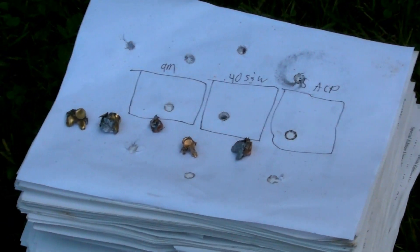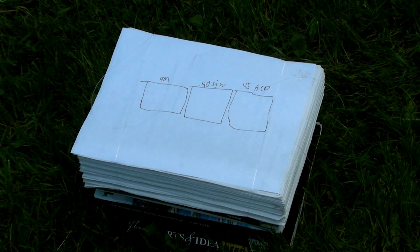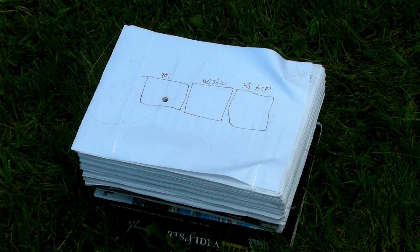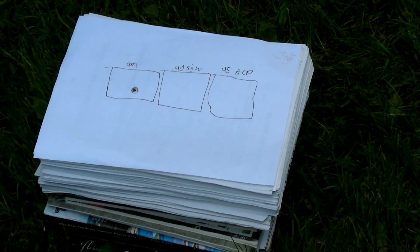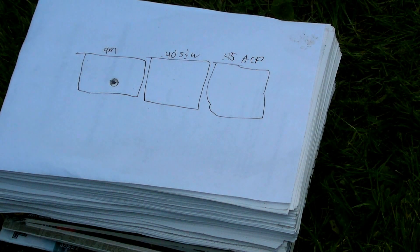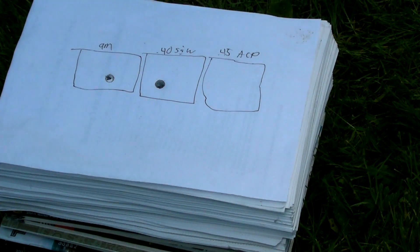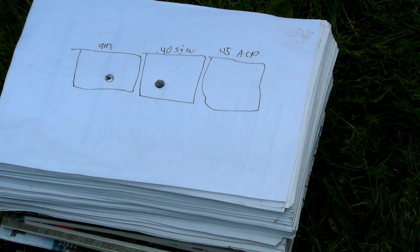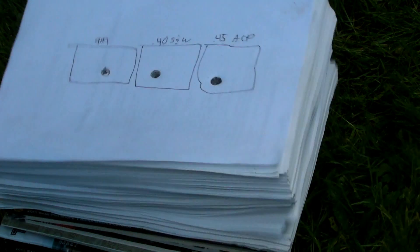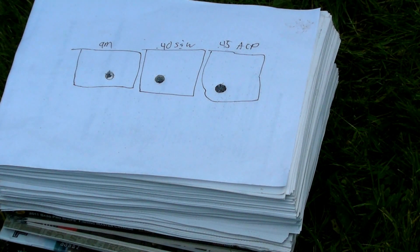Now on the stack of papers here you can see the hollow points, the various hollow points there. And here's testing the penetration of the 9mm. Okay, now for the .40 S&W. Okay, we might as well switch into the .45 real quick, .45 ACP.